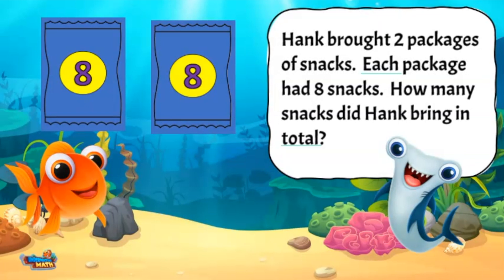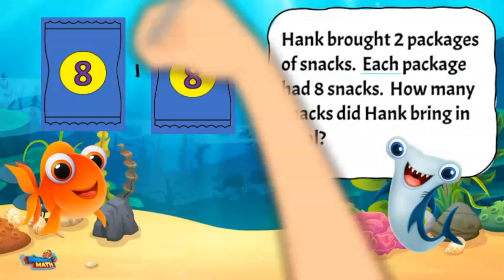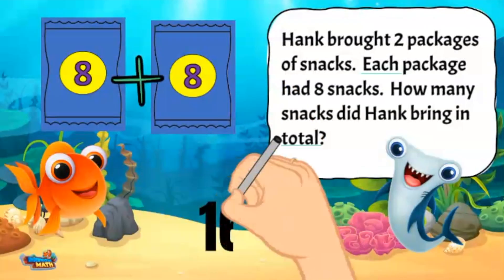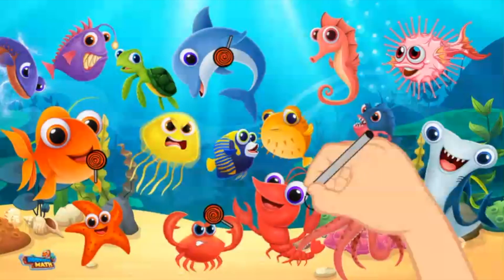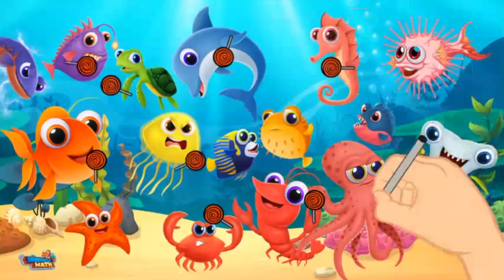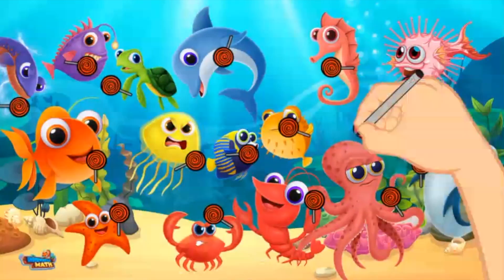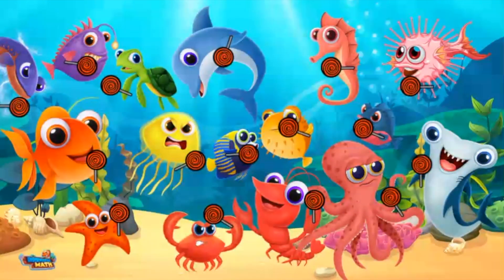We need to multiply eight times two. If we don't know the answer, we can add eight two times for a total of 16. Hank brought 16 total snacks — this means everyone gets a snack, even Miss Spindle! Great multiplying!